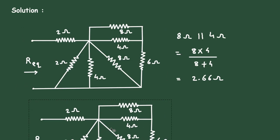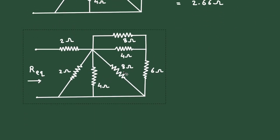8 into 4 divided by 8 plus 4, it is 2.66. Now this 2.66 ohm, again let's copy the circuit and paste it here. We will do step by step. So this will become a single resistor of 2.66 ohm.